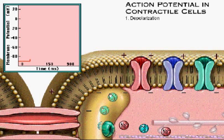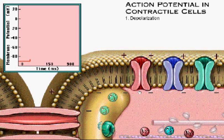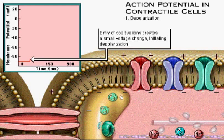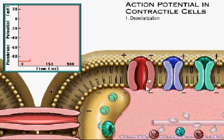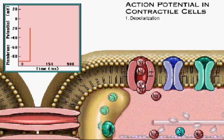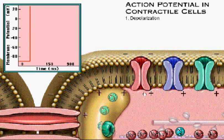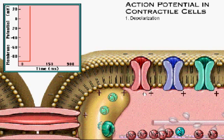Esse é o potencial de disparo para a célula muscular. Quando esses íons positivos entram na célula muscular, ocorre o potencial de disparo que se manifesta na abertura dos canais de sódio, e uma grande quantidade de sódio entra na célula muscular. Com isso, já acontece a despolarização da célula muscular. Notem que existe aqui uma outra diferença: quem despolariza a célula muscular é o rápido influxo de sódio e não de cálcio, como o que aconteceu na célula marca-passo.